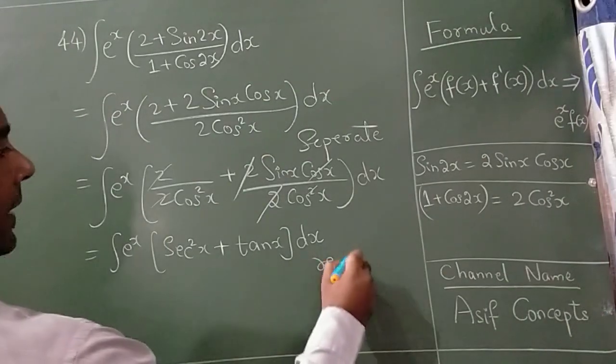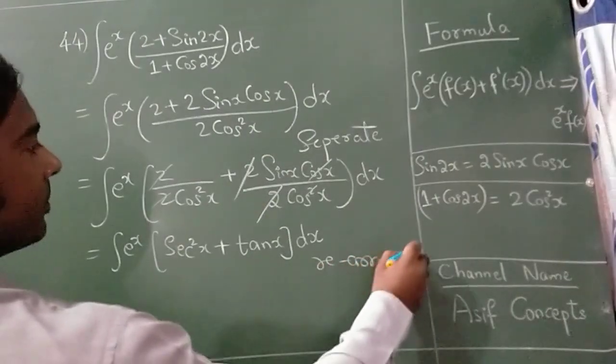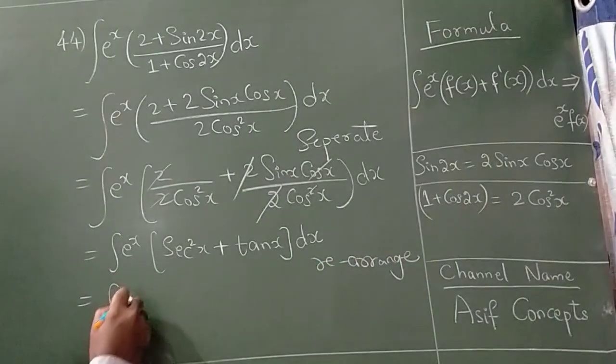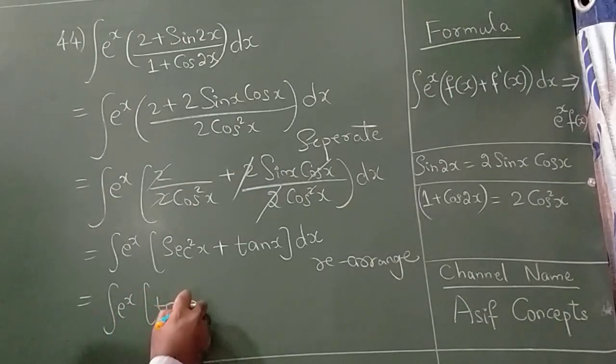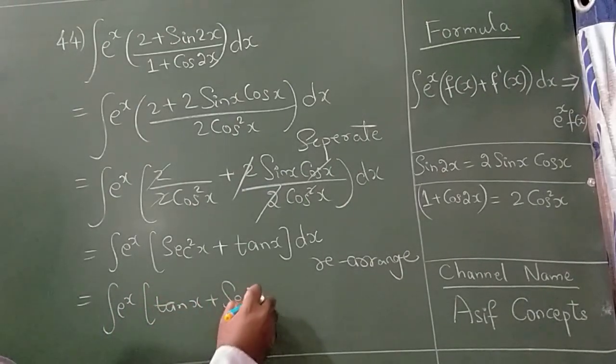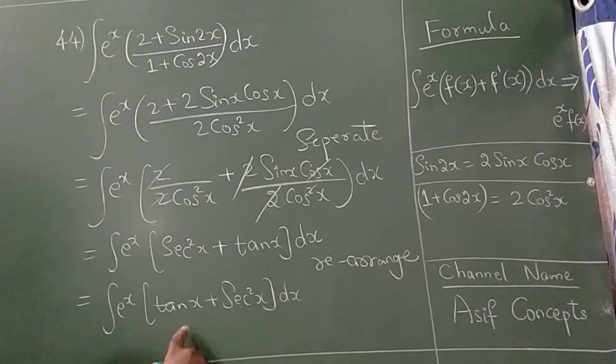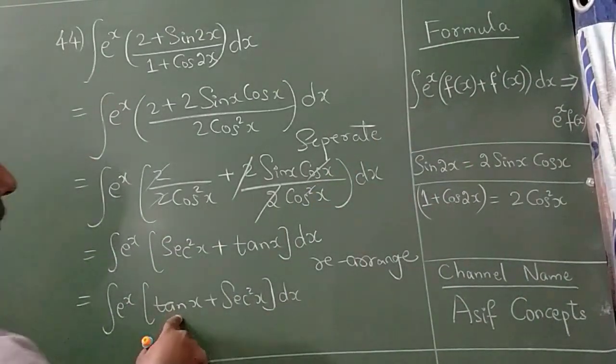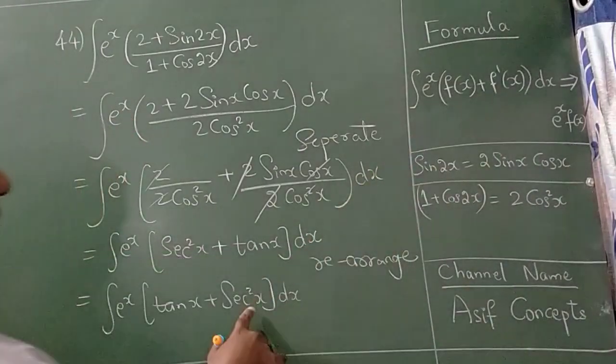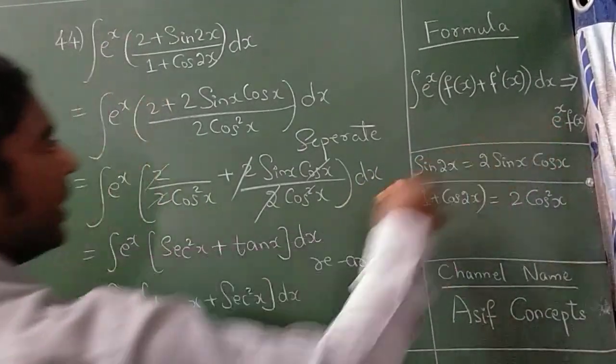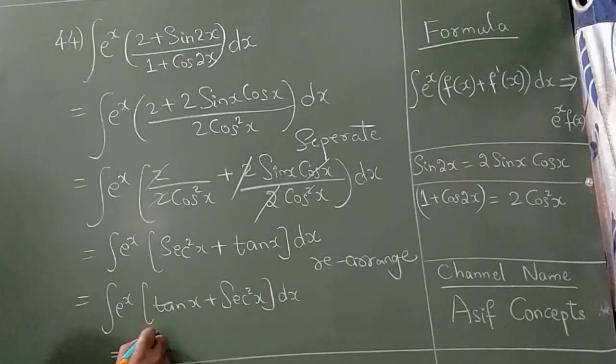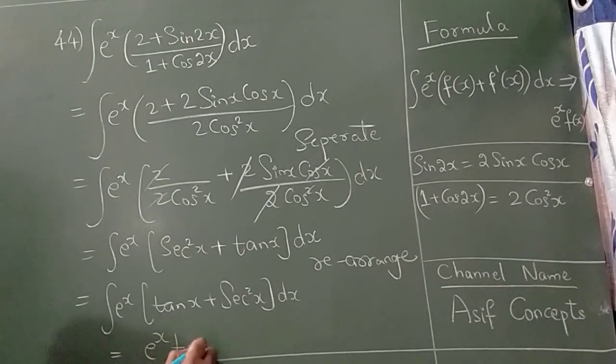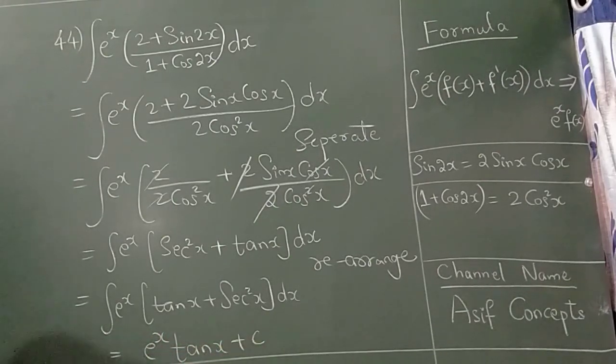Okay now I will rearrange this. The reason to rearrange this is this is of the form where f of x is tan x. Now if I differentiate this I will get f dash of x. So what is the formula? e raise to x f of x. So the answer is e raise to x tan x plus c. This completes your answer.